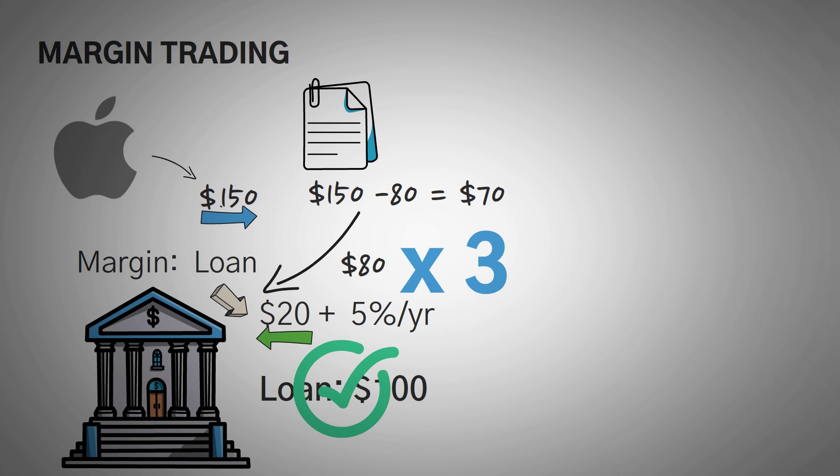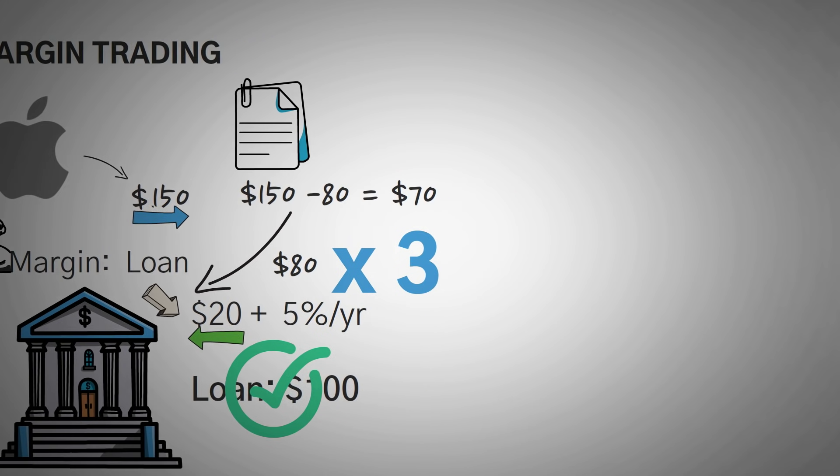So essentially you made $70 by only spending $20. This means that you more than tripled your money, even though the stock only went up 50%. This is the power of margin.